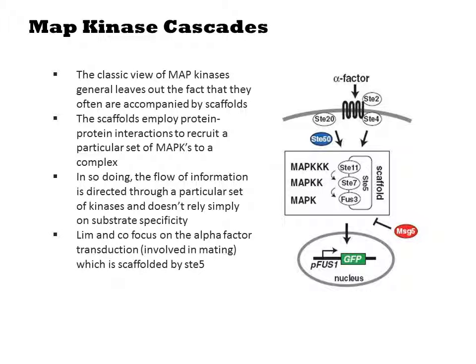This paper focuses on alpha factor signal transduction, which is involved in mating. Here, the kinases are scaffolded by ST5 as drawn. With this cascade, signaling with alpha factor results in activation of the kinases and expression of a PFUSE1 promoter driving GFP.